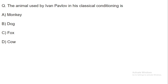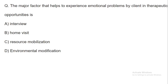Next question: What animal did Ivan Pavlov use in his classical conditioning experiment? He used a dog. In his classical conditioning experiment, Pavlov studied stimulus, saliva response, and bell stimulation — all involving a dog as the experimental animal.